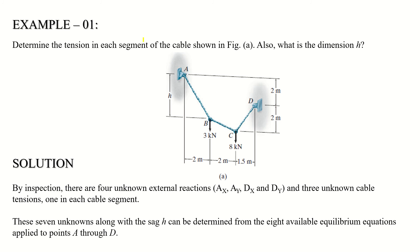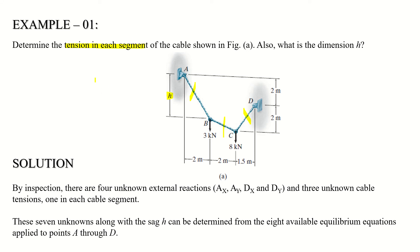The first example involves point loads acting on a cable. The statement asks us to determine the tension in each segment and the dimension h. Since it only asks for segment tensions and h, we do not need to find external reactions. If it said 'analyze the cable system' we would also determine Ay, Ax, Dy, Dx and the sags, but here we focus only on the specific unknowns.